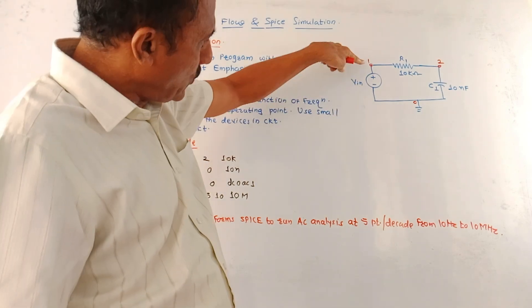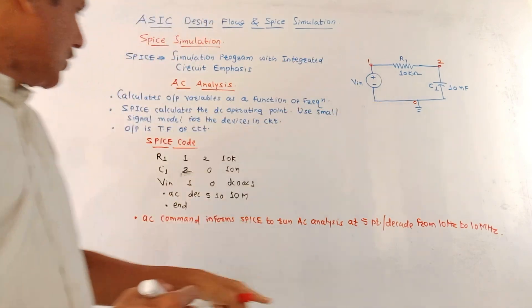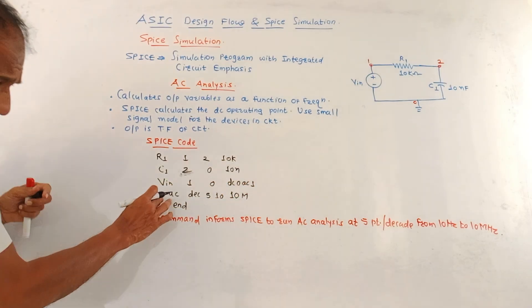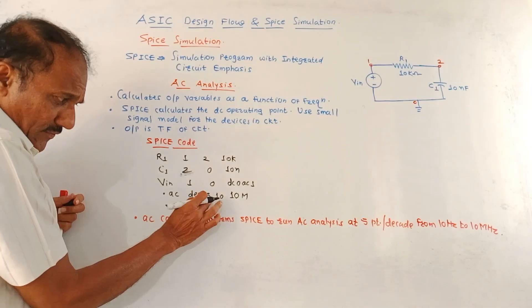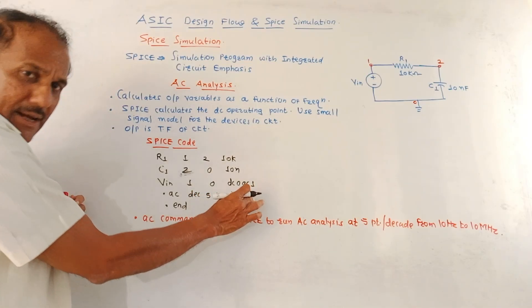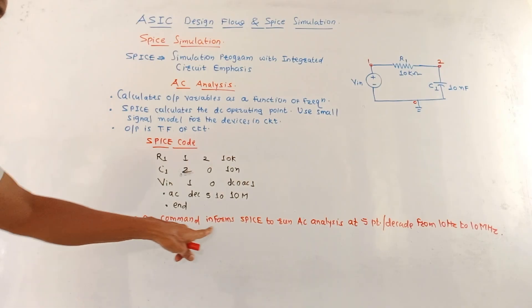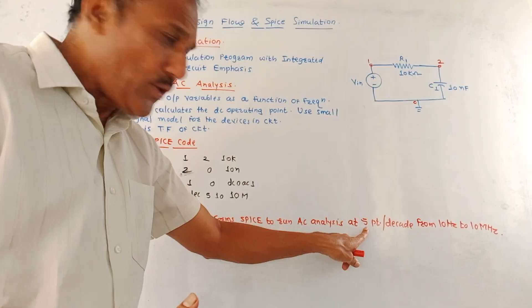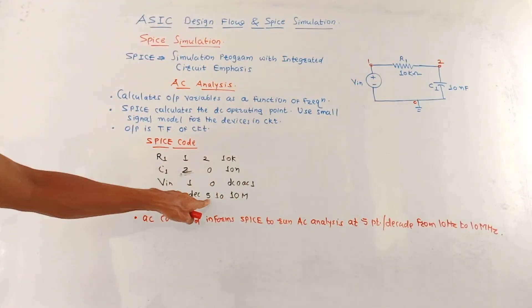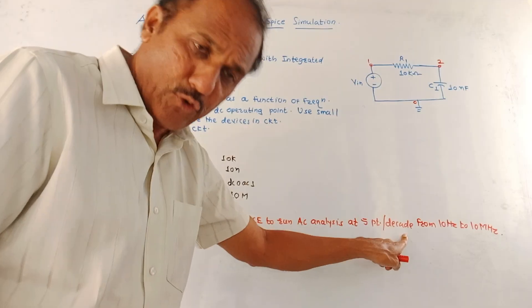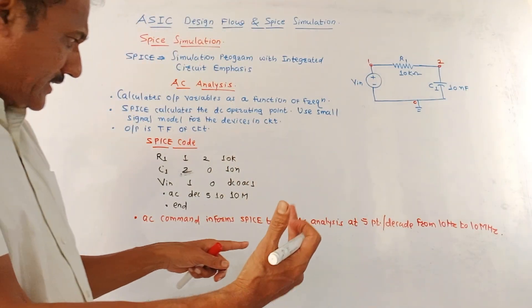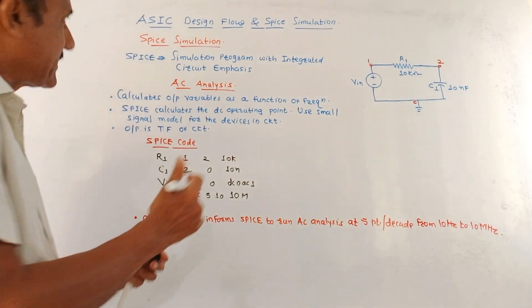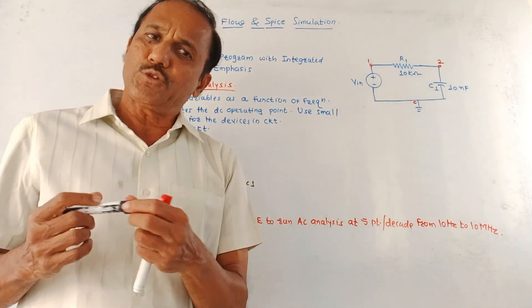Then VIN. VIN, that is the voltage source is connected between 1 and 0. So VIN is 1 and 0, DC0, AC1. This particular command, .AC, DC5, 10, and 10 mega. M means mega. This AC command informs SPICE to run the AC analysis at 5 points per decade. Because here we have written 5, 10. 5 points per decade from the frequency range is 10 to 10 megahertz. So this is how the AC analysis can be done by using the SPICE simulation.